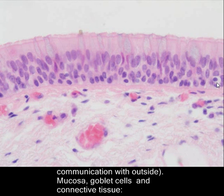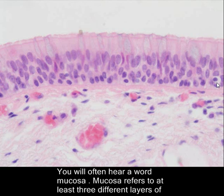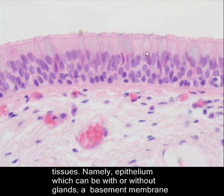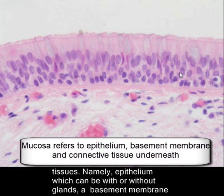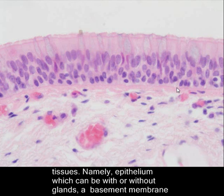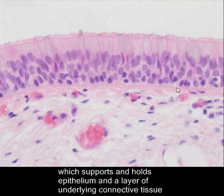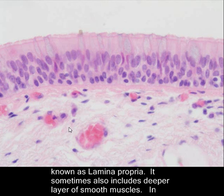You will often hear the word mucosa. Mucosa refers to at least three different layers of tissues: namely epithelium — which can be with or without glands — a basement membrane which supports and holds the epithelium, and a layer of underlying connective tissue, which is also known as lamina propria.